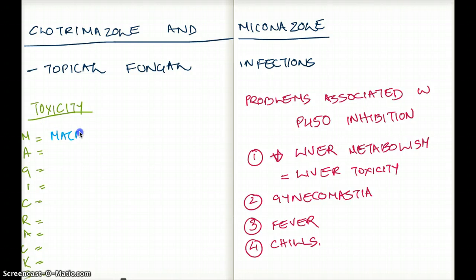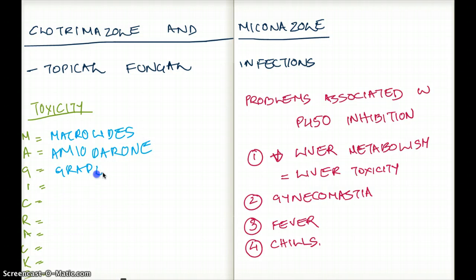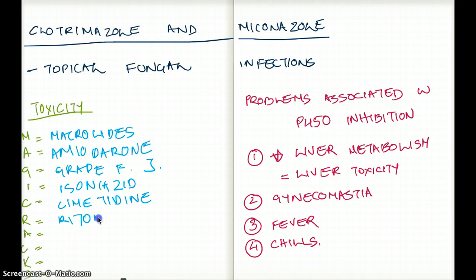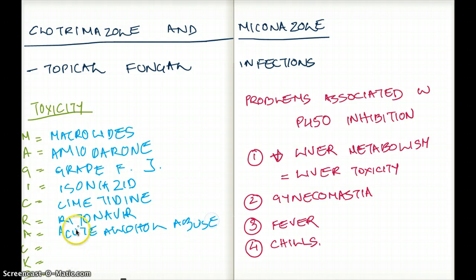M for macrolides. A for amiodarone. G for grapefruit juice. I for isoniazid. C for cimetidine. R for ritonavir. A for acute alcohol abuse. C for cipro or ciprofloxacin. K for ketoconazole — so here is our ketoconazole, representing the azoles. And S for sulfonamide.